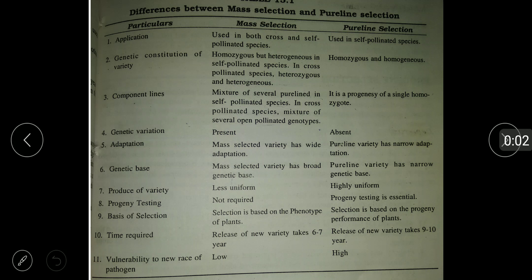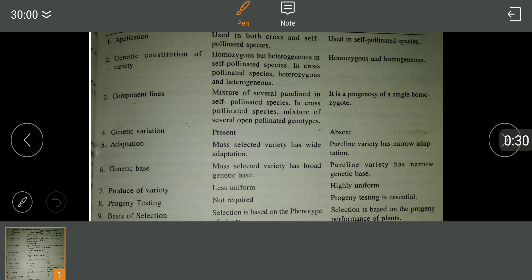In this video we are going to discuss the difference between mass selection and pure line selection. The first difference is application: mass selection is used in both self and cross pollinated species, whereas pure line selection is used in self pollinated species only.